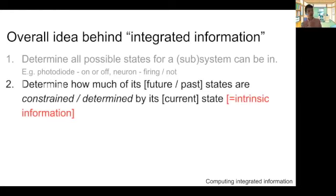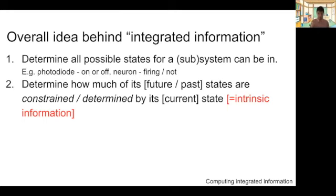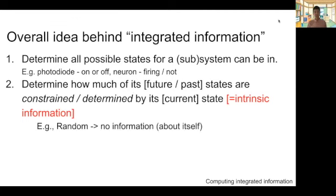Intrinsic information is how much the current state of the system knows or predicts about future and past states — from the inside perspective, how much it knows about itself. For example, if the system's behavior is completely random and the system doesn't have any access to this randomness itself, then it can't predict any future and doesn't know anything about its past state. That corresponds to zero intrinsic information.